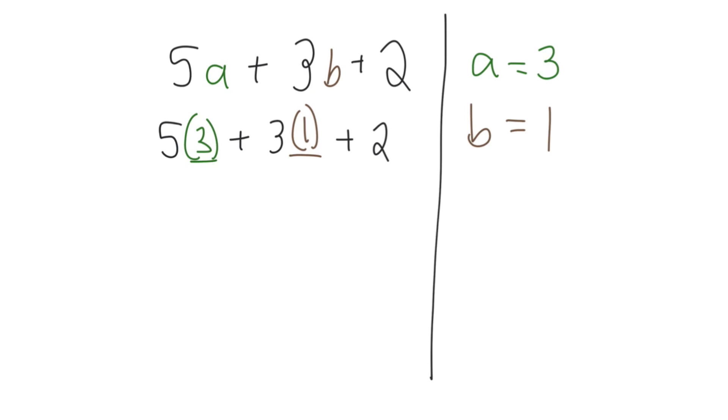Now that the values are substituted in, follow the rules of order of operations in order to evaluate the expression. So multiply 5 and 3 here to get 15, plus multiply 3 and 1 to get 3, plus 2.